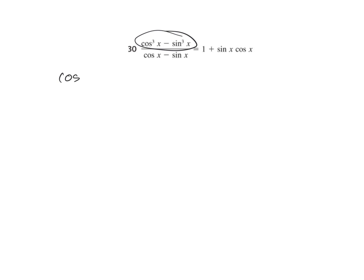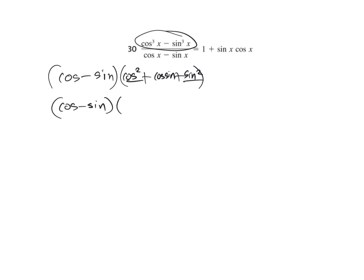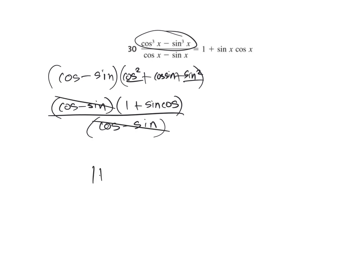We have the difference of cubes. Take the cube roots with the minus sign first, then plus signs on the other side. Square the first, square the last, and multiply the two together: cosine sine cosine. We have cosine minus sine on top. Cosine squared plus sine squared is 1, so that's 1 plus sine cosine. All over cosine minus sine, which reduces, leaving just 1 plus sine cosine. That matches. Check.